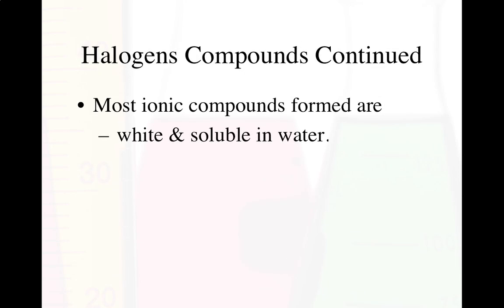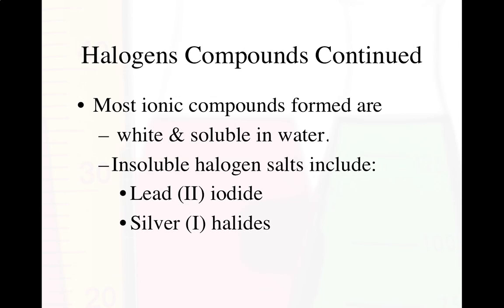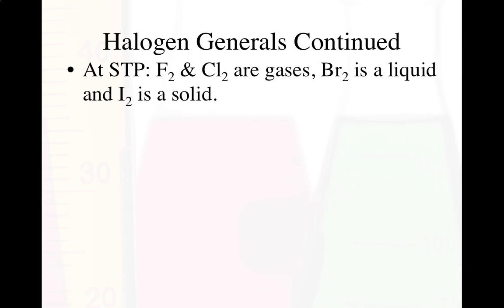Most ionic compounds formed between halogens and a metal are white and soluble in water. However, there are some insoluble halogen salts — lead iodide, when the Pb²⁺ ion reacts with iodine, will not dissolve in water, and any silver(I) halides are also insoluble. At standard temperature and pressure, fluorine and chlorine are gases, bromine is a liquid, and iodine is a solid — visible on our classroom periodic table by color.